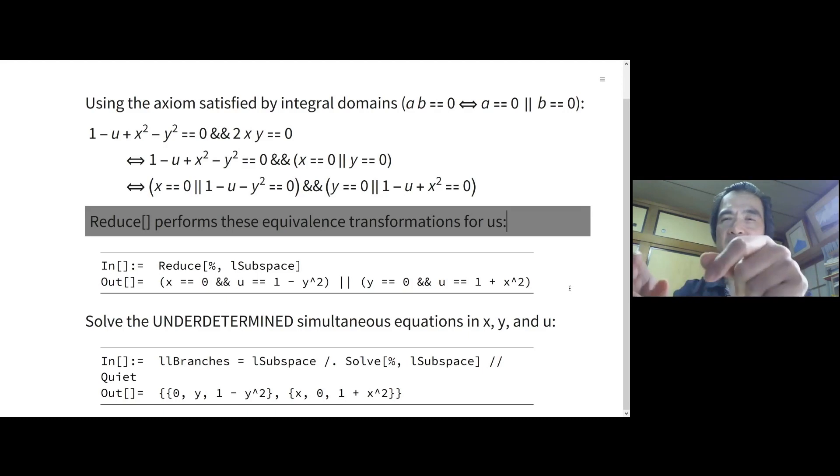Then we can solve this underdetermined simultaneous equations in x, y, and u. This is the Wolfram language solve function. It's very powerful. It can solve the equations when they are underdetermined. We get two lists - list of lists. Two lists here: zero, y, one minus y square, and x, zero, one plus x square. This means it doesn't look like a factorization, but logically, this is a logical factorization to generate Fehrian branches.